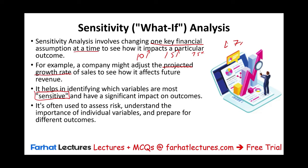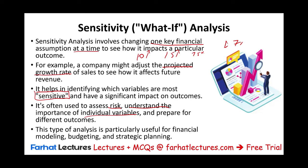This type of strategy is often used in assessing risk, understanding the importance of individual variables, and preparing for different outcomes based on the decision. It's also helpful for financial modeling, budgeting, and strategic planning. For example, a car insurance company would ask: what happens if car accidents overall go up by 3% or 4%? What would happen to our payout? Or if you are preparing a budget, let's change the selling price or the volume — what would happen to our bottom line?